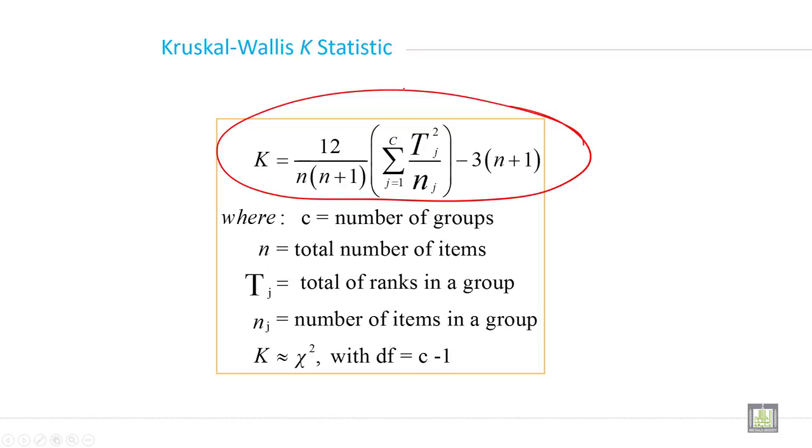This is the formula, the manual formula to do the Kruskal-Wallis calculation, where C is the number of groups, N is total number of items, T_j is total of ranks in a group, n_j is number of items in a group, and K follows chi-square with degrees of freedom C minus 1, that is column minus 1.